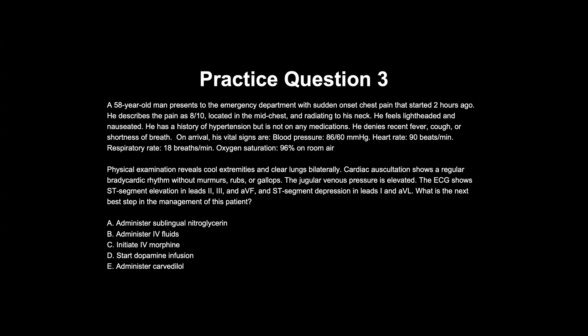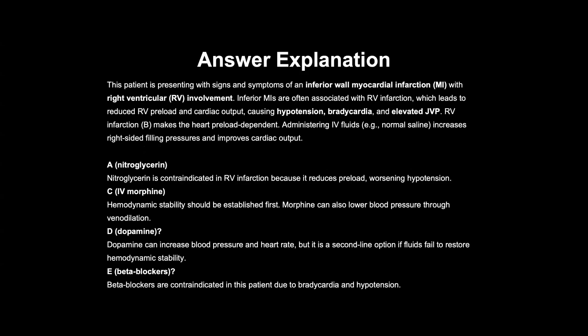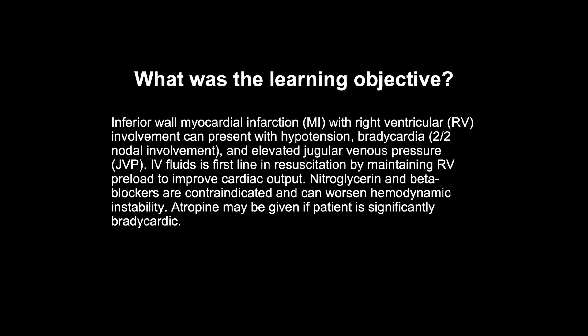Answer choices: sublingual nitroglycerin — contraindicated in inferior MI; IV morphine — also contraindicated as a vasodilator; dopamine — he just needs fluids, not a vasopressor; carvedilol — never give beta-blockers when the patient is already hypotensive. IV fluids is the correct answer. General tip: 'administer IV fluids' is a fantastic answer on most questions.